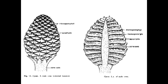In the next diagram, you can see the longitudinal section (LS) of the male cone. When we cut this cone in longitudinal section, the LS shows the stalk and the cone. The cone itself consists of a central cone axis with many microsporophylls.